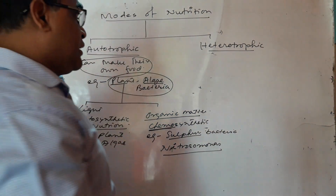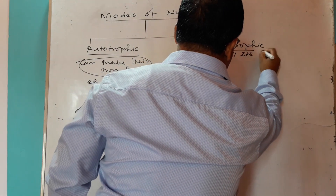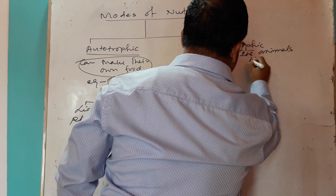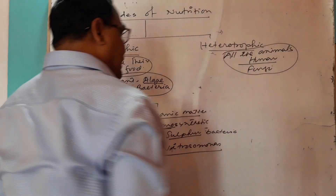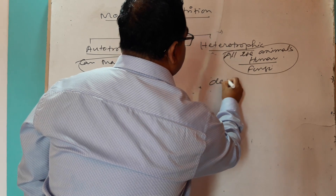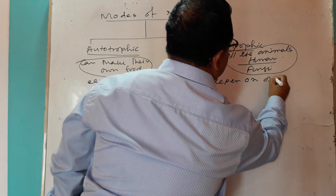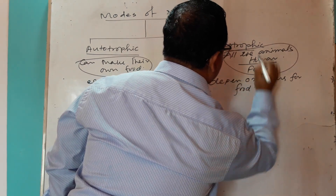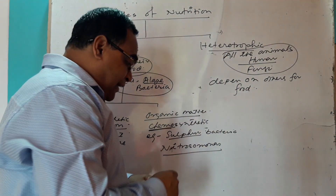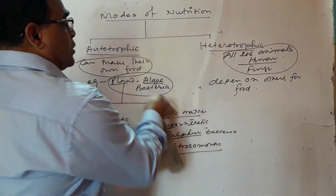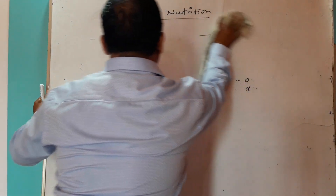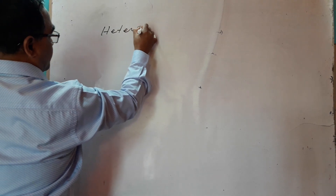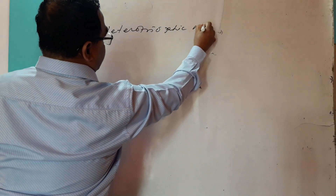Another type of nutrition is heterotrophic, where all the animals are included — including human beings — as well as fungi etc. So these all are heterotrophs, meaning these organisms depend on others for food. These types of organisms can again be classified into different types. Let us see what types of heterotrophic nutrition there are.